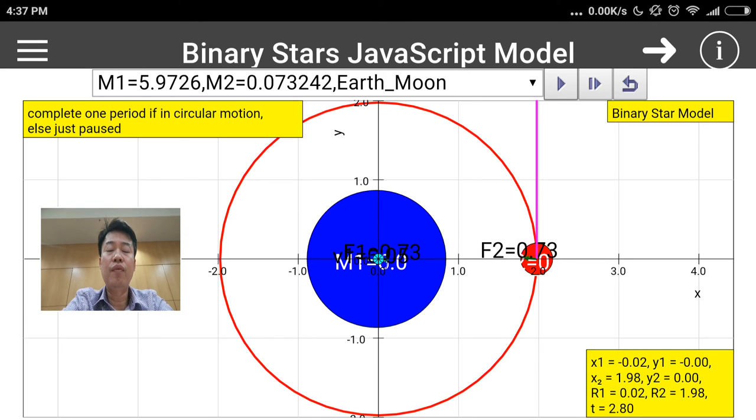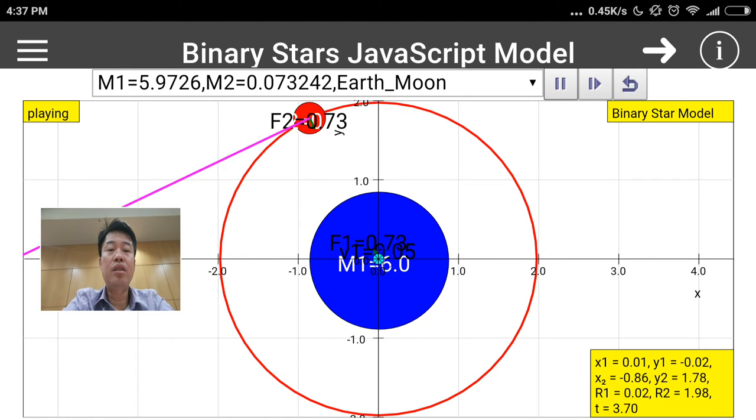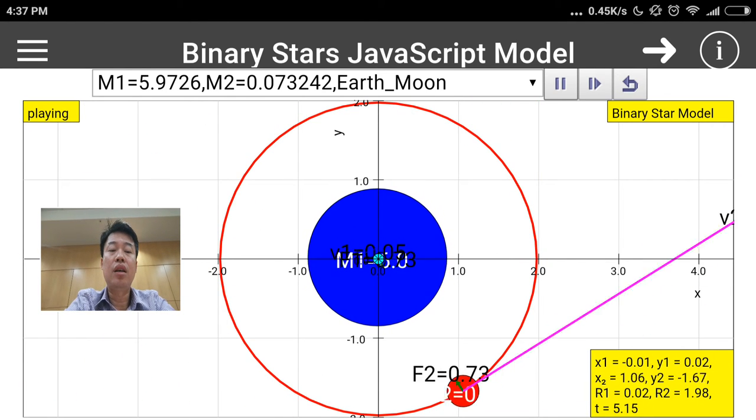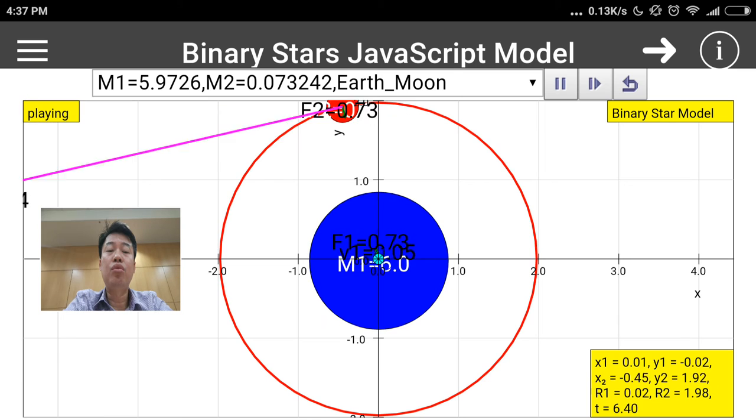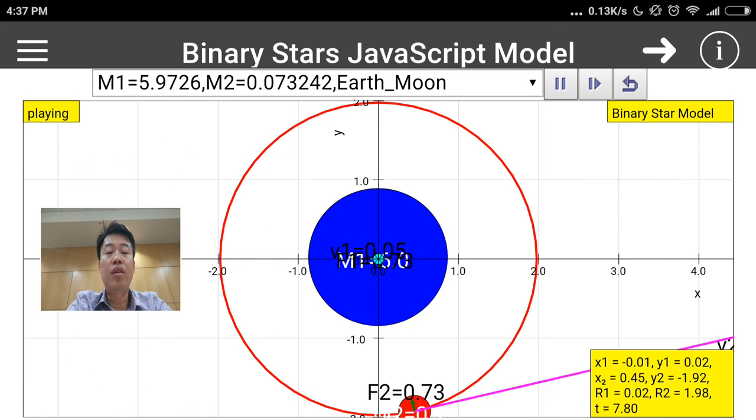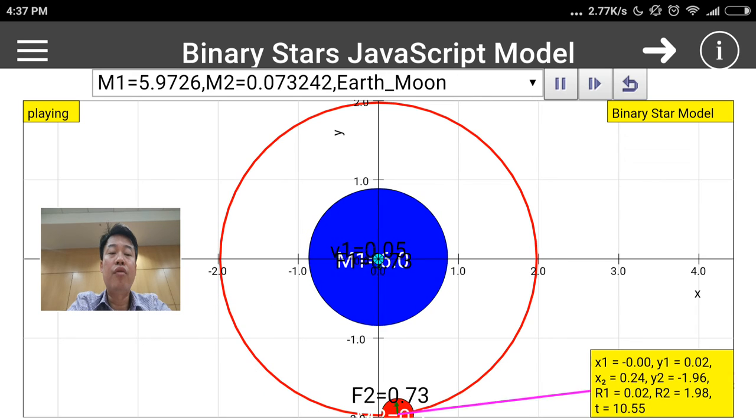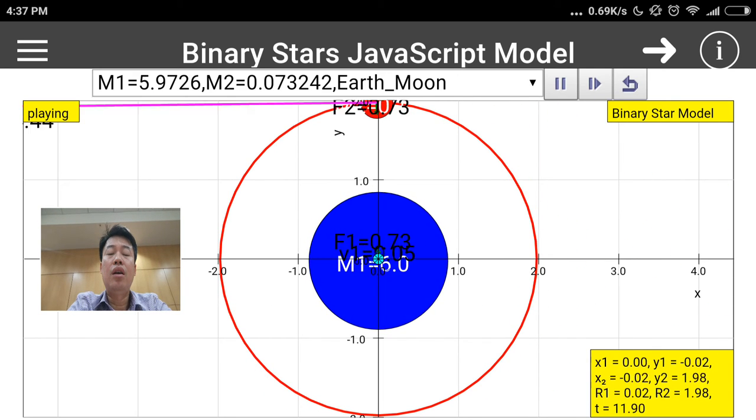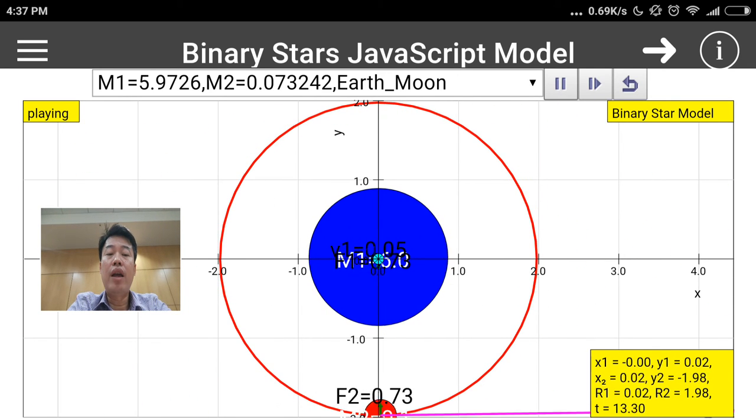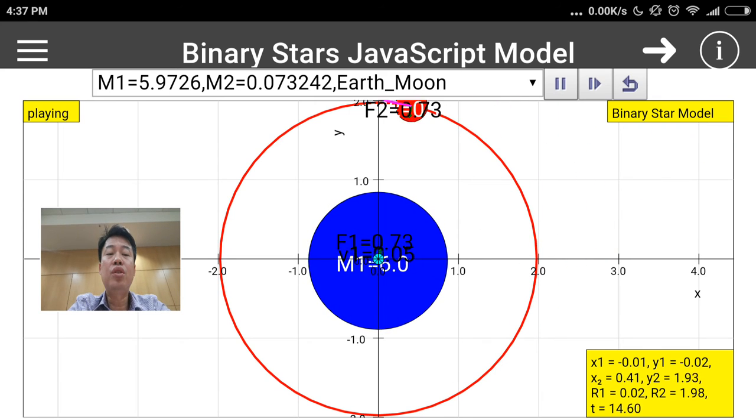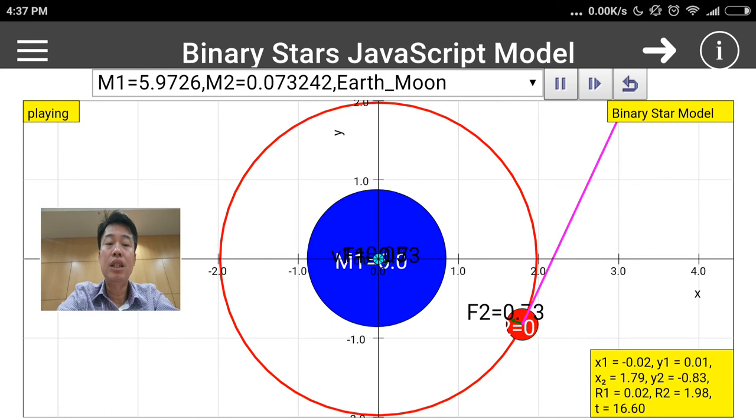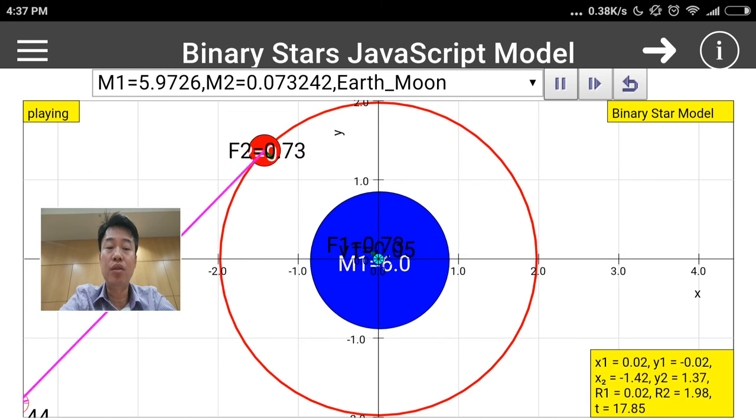Using the binary star model, you can actually see that it is not entirely true. Well, to some degree it is true based on your assumptions, but most cases the physics will tell you that actually the Earth and the Moon go in a circular orbit around their common center of mass.